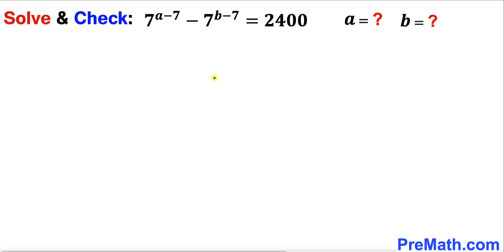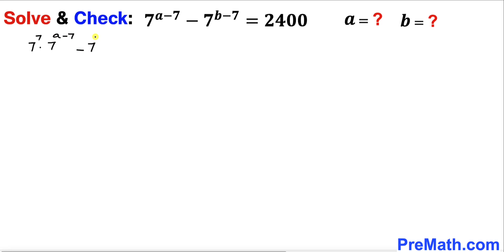Let's get started with the solution. We can see we have 7 power negative 7 and 7 power negative 7 as well. So we are going to manipulate this equation by multiplying by 7 power 7 across the board: 7 power 7 times 7 power a minus 7, minus 7 power 7 times 7 power b minus 7, equals 7 power 7 times 2400 on the right hand side.